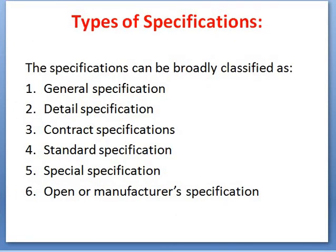There are six important types of specifications, each having its own specialty, advantages, and purpose. Number one is general specifications, number two is detail specifications, number three is contract specifications, number four is standard specifications, number five is special specifications, and number six is open or manufacturer's specifications. Every first word of the specification itself describes its purpose.